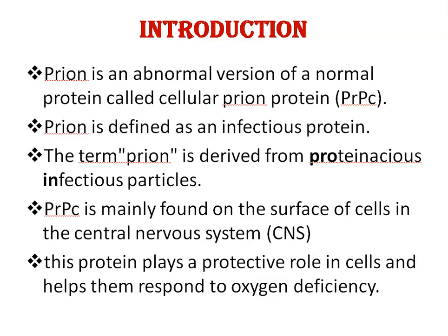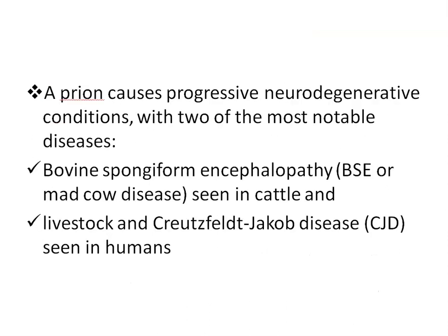PRPC is mainly found on the surface of cells in the central nervous system, but it is also located in other bodily tissues. Although the specific role of PRPC is not clear, research studies showed that this protein plays a protective role in cells and helps them respond to oxygen deficiency. Prion causes progressive neurodegenerative conditions, with the two most notable diseases being bovine spongiform encephalopathy (BSE) or mad cow disease seen in cattle and livestock, and CJD disease seen in humans.